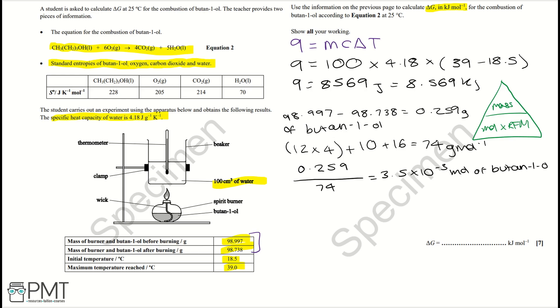So the next part is working out delta S. Because in order to work out delta G, we need the equation delta G equals delta H minus T delta S. And delta S is the change in entropies. And it has the equation of delta S equals delta S of products minus the delta S of reactants.